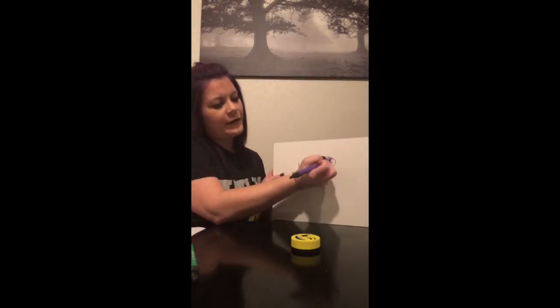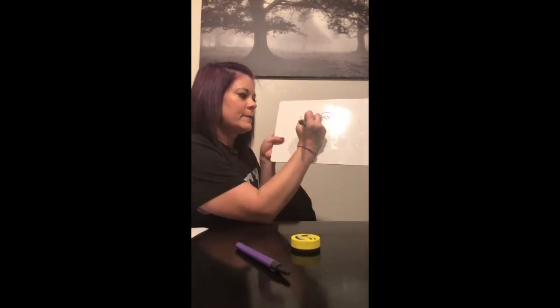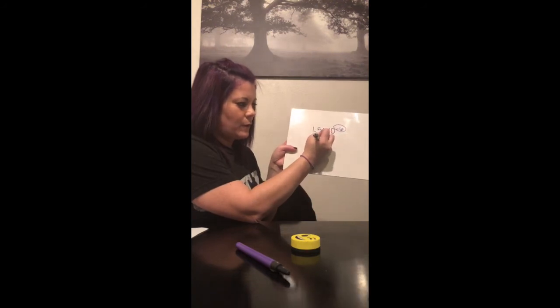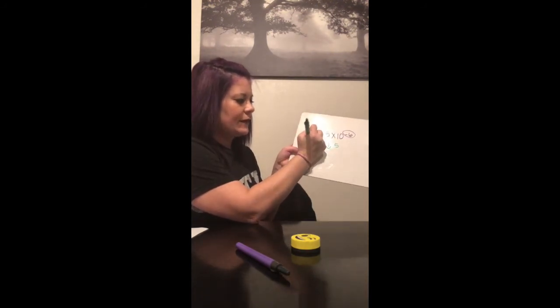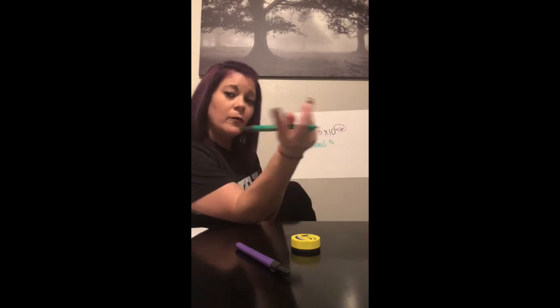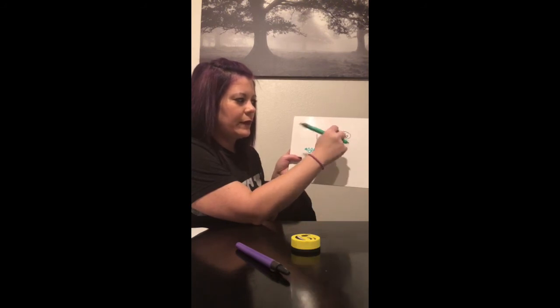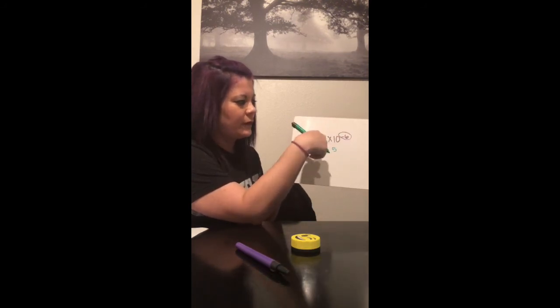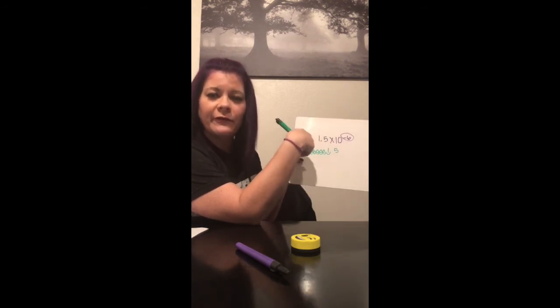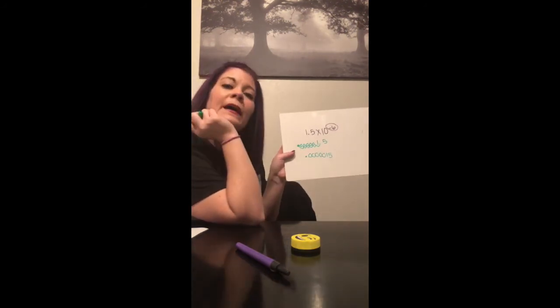Another one: 1.5 times 10 to the negative sixth. Remember, the exponent tells us exactly what to do — we need to move six places to the left because it's negative. You can rewrite the number and do the little humps: one, two, three, four, five, six — that's where the decimal goes. Fill in any empty spots with zeros. Or use the shortcut: we moved it once, so we need 5 more moves, meaning 5 zeros before the 1.5, giving us 0.0000015.